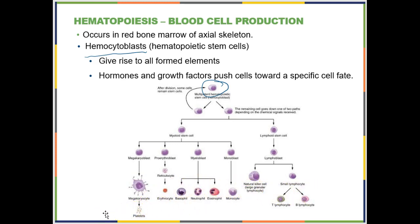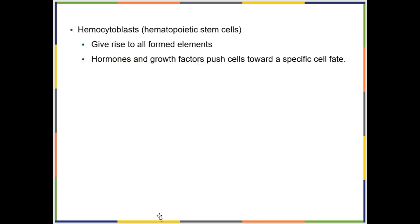All of your different formed elements — red blood cells, white blood cells, and platelets — are all ultimately derived from a hemocytoblast, which is an example of an adult stem cell. You have this one stem cell, and depending on which hormonal or growth factor it is exposed to, that determines what developmental route it takes.